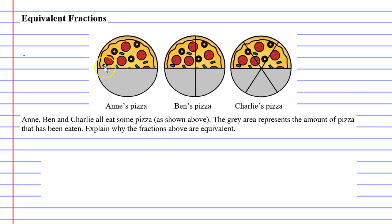Each pizza has a grey area. Now the grey area represents the part of the pizza that the person has eaten. Now if we were to write down how much they ate as a fraction, Anne ate half of the pizza, Ben ate two quarters of the pizza, and Charlie ate three sixths of the pizza.